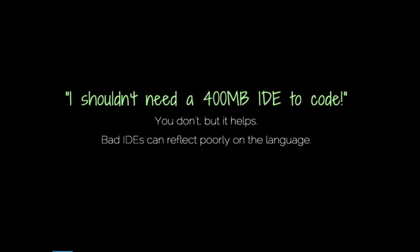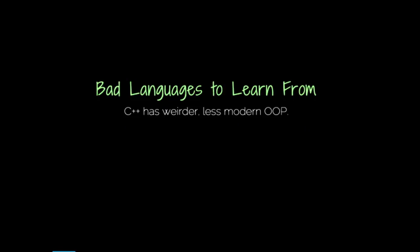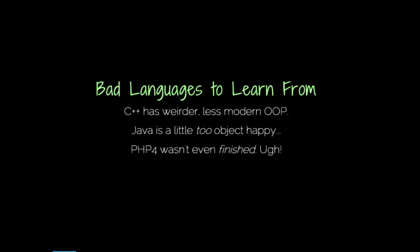You might also just hate this language. Why do you have this language with all this weird stuff in it? A bad initial experience can taint your view of a language, and there are a lot of bad experiences to have in object-oriented programming. C++ has really weird syntax in places and is a less modern version of OOP than we have today. C++ was one of the first most popular OOP languages, though OOP actually goes back to the 1960s — it's not new. Java was a little too object-happy; everything was an object in places where it kind of didn't make sense. And then there's PHP 4, which didn't even have a finished concept of OOP — it was incomplete and led to a lot of weird code.